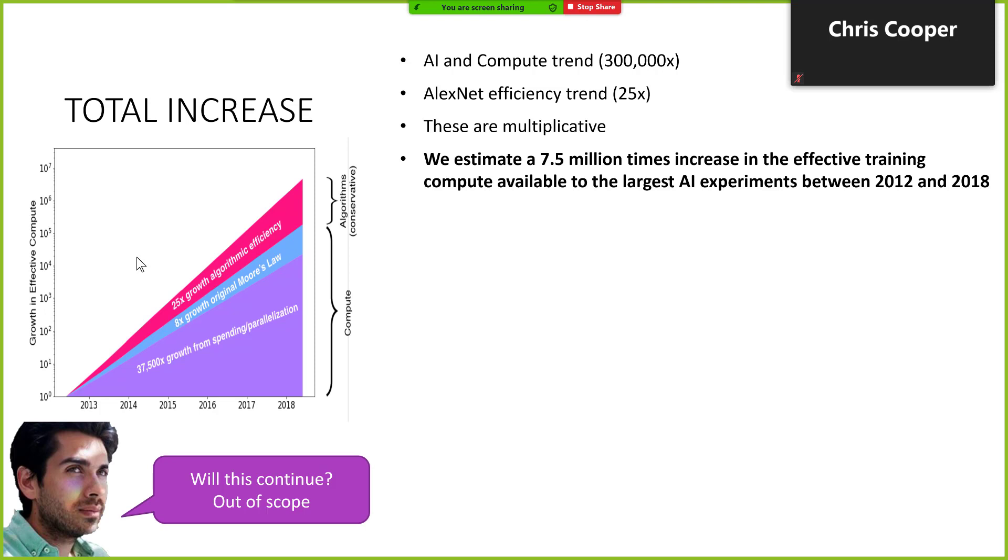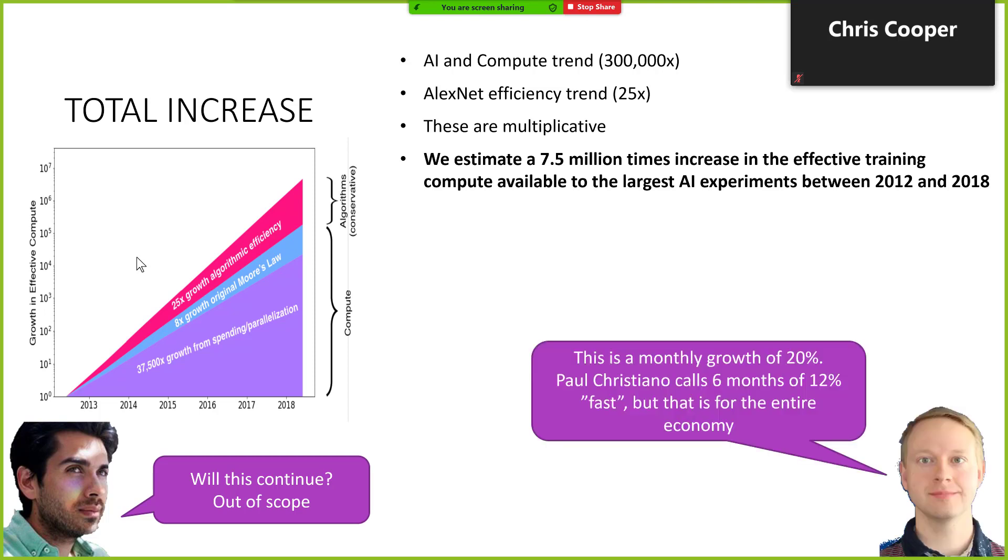So, the obvious question that we're really interested in is whether this will continue. And basically Danny Hernandez says he will not discuss this in this paper, this is out of scope. And that's of course sad because that's what we really care about. But this 7.5 million times comes out to a monthly growth of 20%. We have the definition of fast takeoff, which says that 6 months of 12% increase without 24 previous months need to be at most 6% or something like that for the entire economy. And in this case we can see that if the economy starts to grow at the rate of AI, then in that case obviously we would have not just a fast takeoff, but something far beyond that basically.